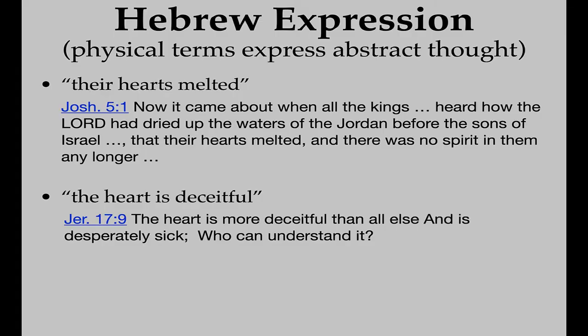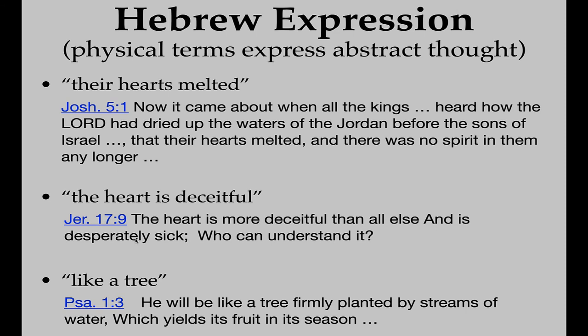Another example, quite pointed, is Jeremiah 17:9: 'The heart is more deceitful than all else. It is desperately sick. Who can understand it?' Jeremiah is talking about the heart — not the physical organ that pumps blood, but our inward self, our attitudes, our spirit, the way we think about things. The Hebrew word used is actually the word for bent or distorted. The heart is deceitful, not straightforward. This is an example of using a physical thing — the heart — to express an abstract reality. We use 'heart' in this sense even today, primarily because we picked it up from the Bible.